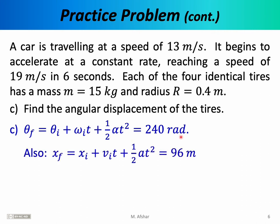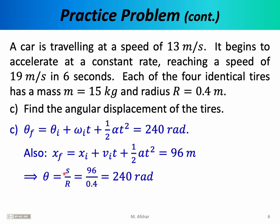We can answer the same question a different way: use a linear kinematic equation to find the linear distance traveled. With x_initial = 0, v_initial = 13, and the calculated linear acceleration, we find the linear distance traveled is 96 meters. Then using the arc length formula, theta = s/r = 96 / 0.4 = 240 radians — exactly the same answer. The connection between linear and angular variables gives us two equivalent ways to answer the question, and it's nice to calculate both ways as a check.